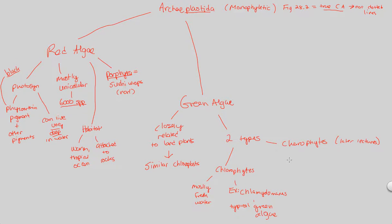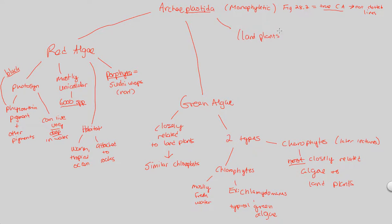Charophytes are the most closely related algae to land plants — write that down as 'most closely related algae to land plants.' So that's our green algae story: charophytes versus chlorophytes, with green algae overall closely related to land plants. The other type of Archaeplastida to remember are land plants themselves. Look at figure 28.2 — highly suggested to really drive home the point of Archaeplastida's monophyletic nature.